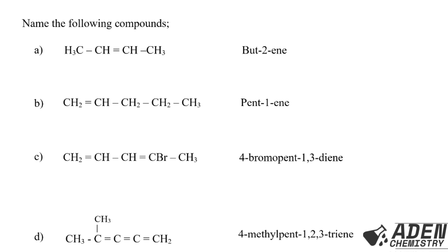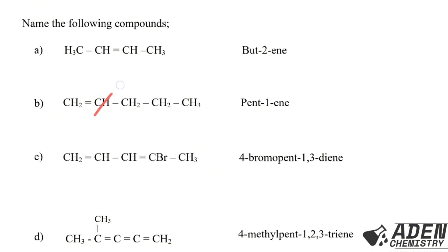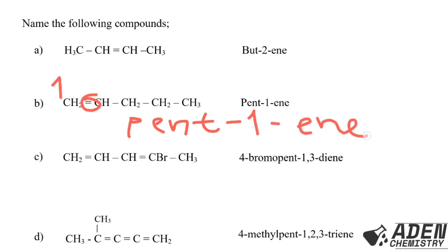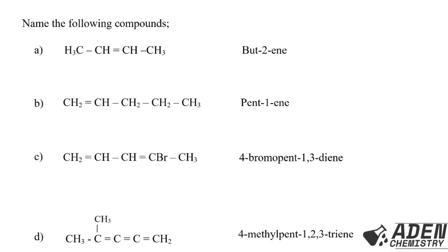For compound (b): count the carbon atoms — one, two, three, four, five — so the prefix is 'pent-'. The double bond is at carbon number 1, so we write 'pent-1-'. Are there any attachments? No. So the IUPAC name is pent-1-ene.